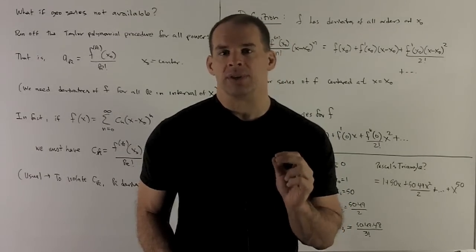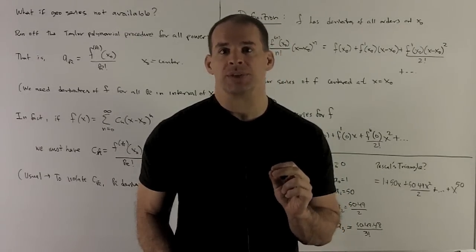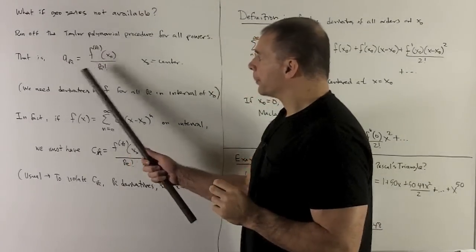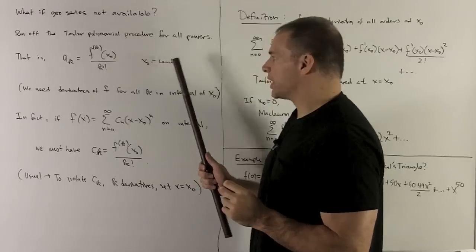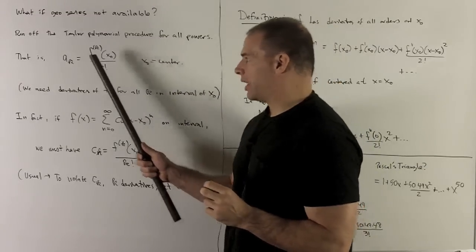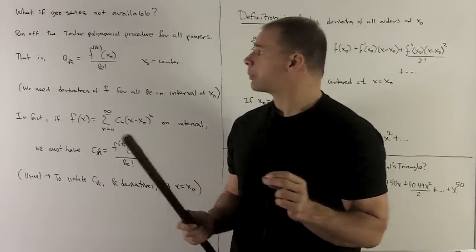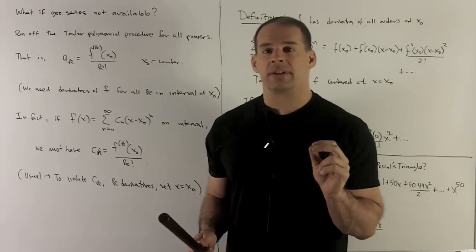So what we can do instead is to take a look back to Taylor polynomials. What do we have there? We're going to have some center x0, and we have a procedure which takes our derivatives. We're going to evaluate that derivative at the center,